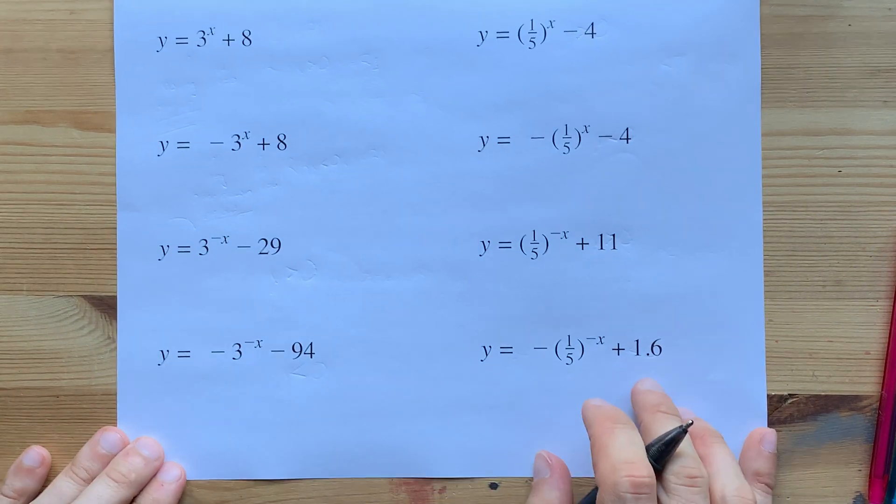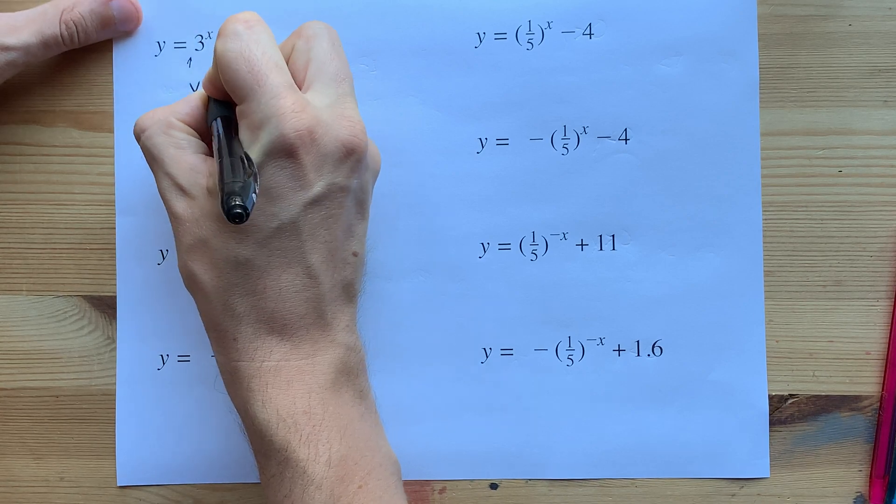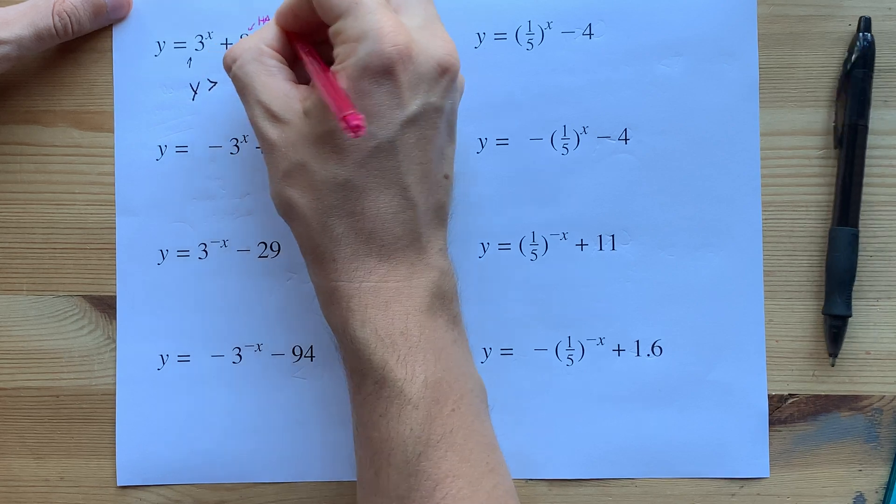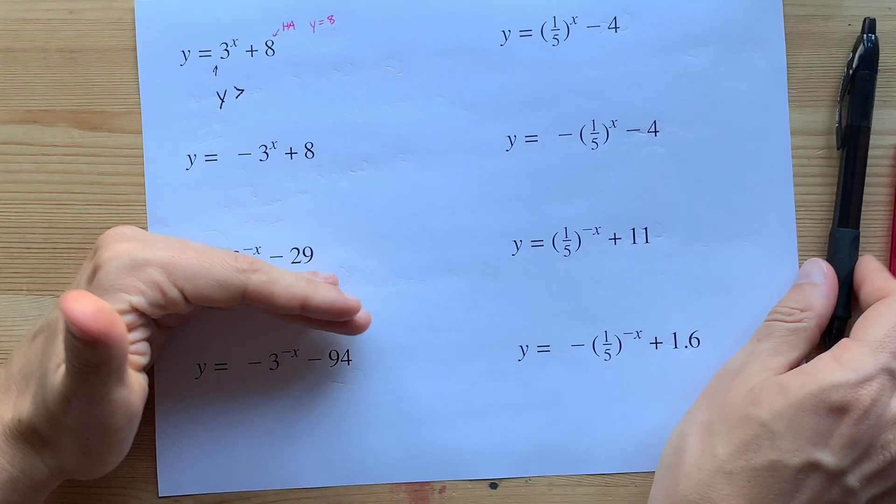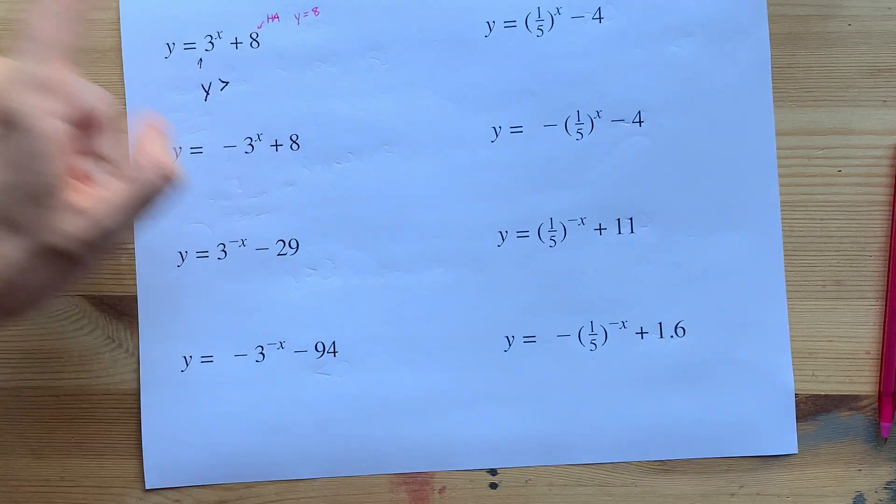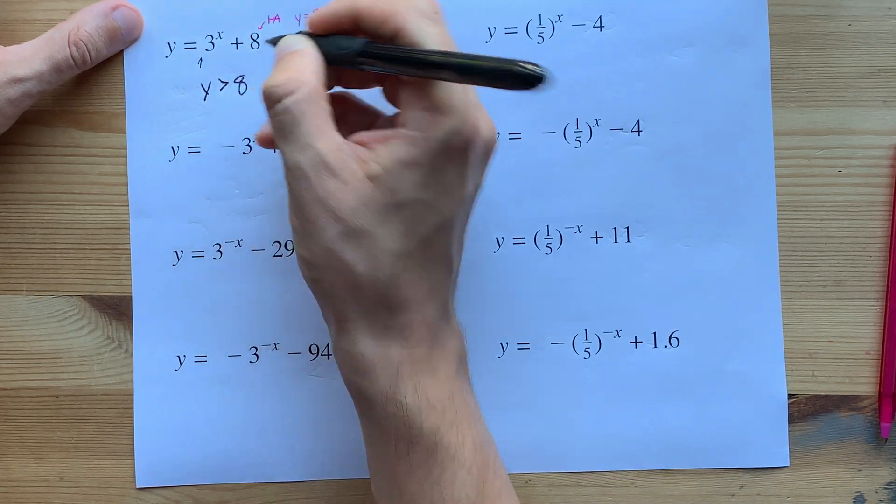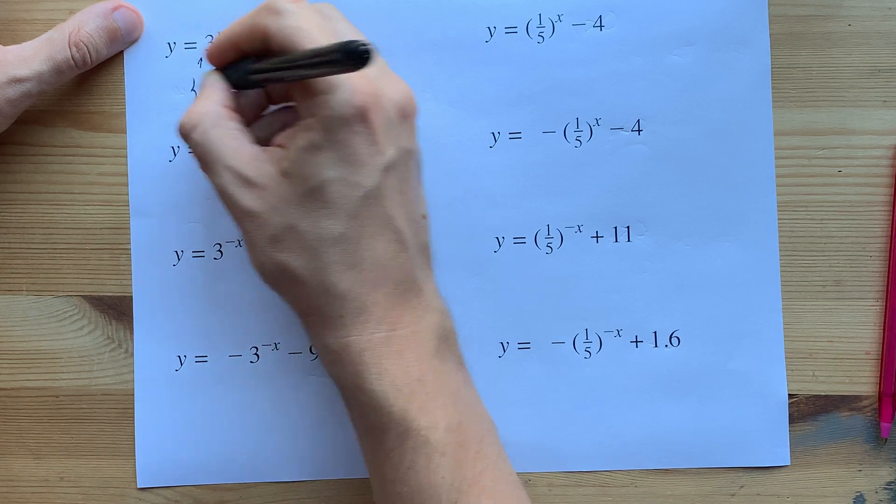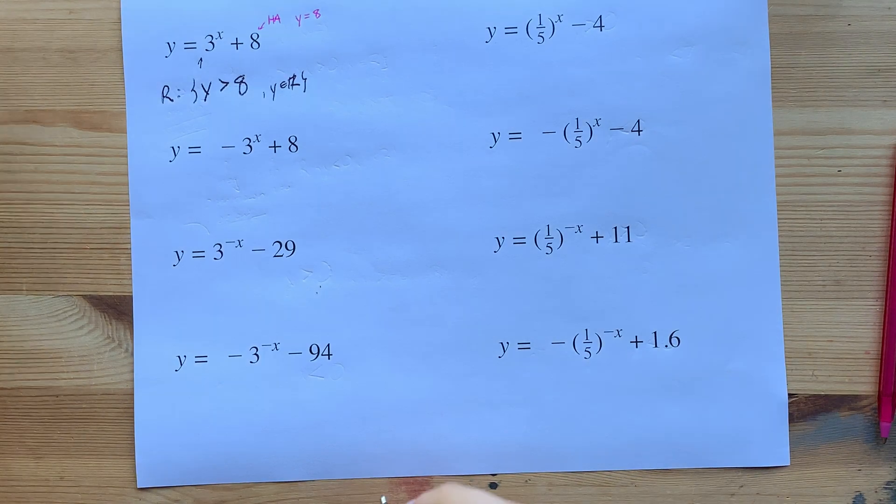Now, we're going to get to some interesting ones. Here, we have no negative. So, it's y greater than. But we do have a different horizontal asymptote. Because there's something added or subtracted from the end, we have a vertical shift. And the horizontal asymptote has moved up eight units to eight. It will always be the same as that number. Y greater than eight. Don't forget, for all of these, you're supposed to write y∈R. Put it in some curly brackets. Most teachers want R for a range.